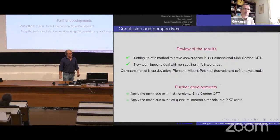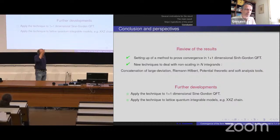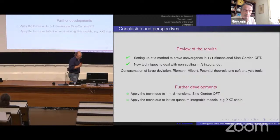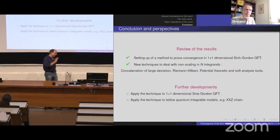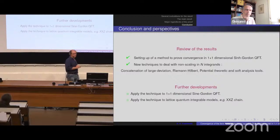In summary, I have presented a method to prove convergence of two-point functions in the space-like regime for the sinh-Gordon model. To deal with this, one had to develop new techniques for non-scaling-in-n n-fold integrals with n-scaling interactions, based on concentration of measure, Riemann-Hilbert problems, aspects of potential theory, and soft analysis tools. To extend this work, it would be interesting to attack multi-point correlation functions in the sinh-Gordon model and then more complicated models like the sine-Gordon quantum field theory and lattice quantum integrable models. Thank you.